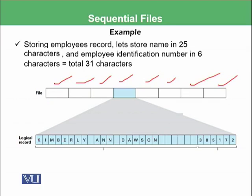So how will we understand that the employee name has finished and then the social security number has started and then finished, and from there the next record has started? We will identify at the start that we want to store the name in 25 characters and the identification number in 6 characters.